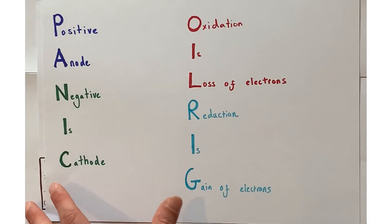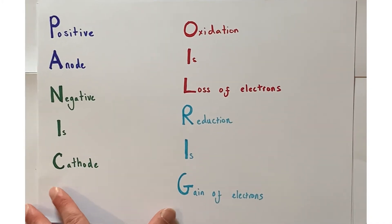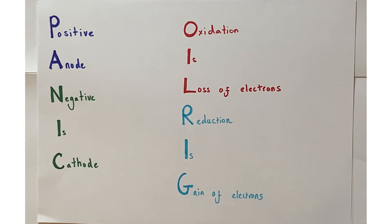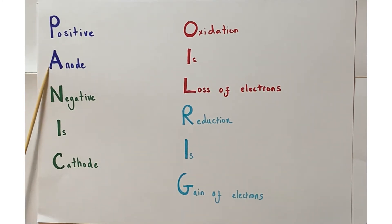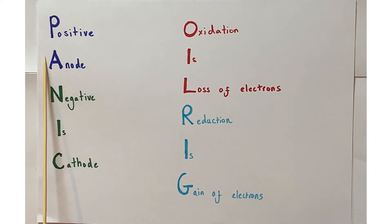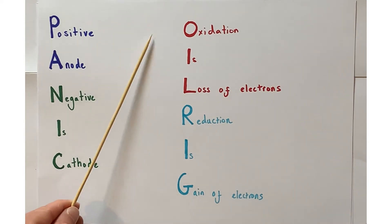Sometimes it can be hard to remember some of these facts, so we have useful mnemonics. The first helps us remember the names of the electrodes: 'Don't Panic' — a bit like the Hitchhiker's Guide to the Galaxy — reminding us that the positive electrode is the anode and the negative electrode is the cathode.